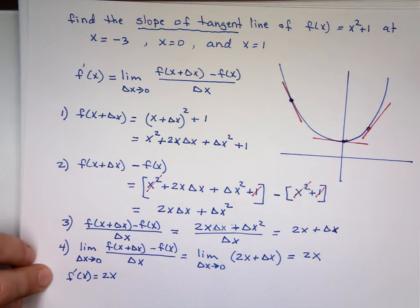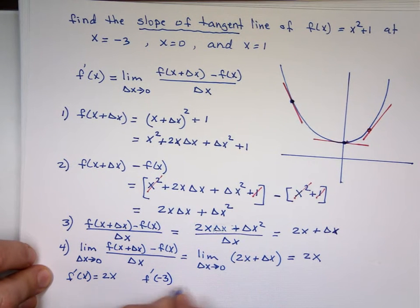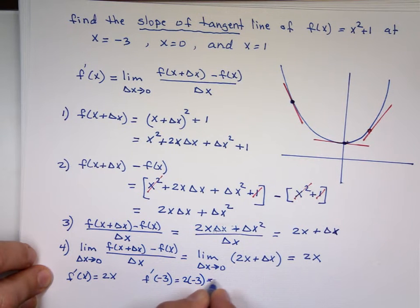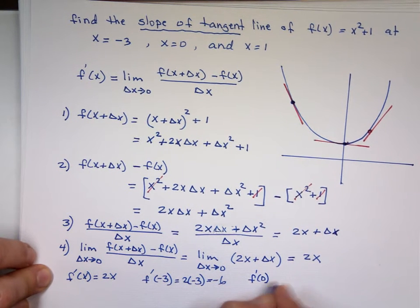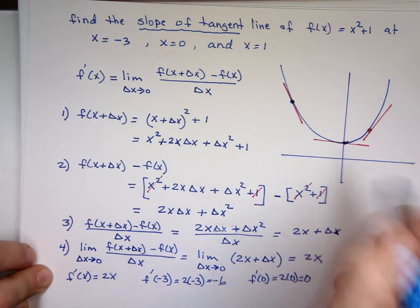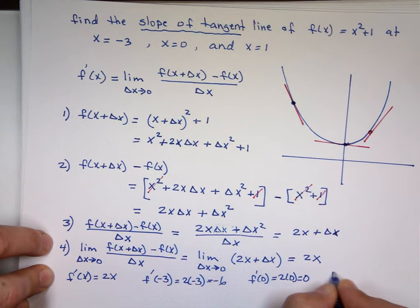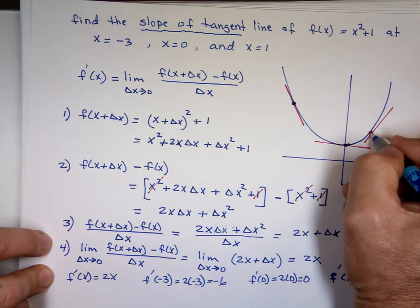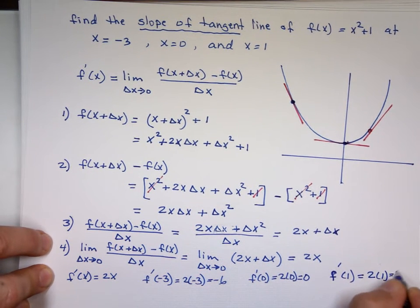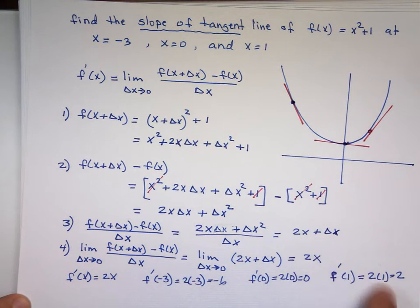Now evaluate: f′(−3) = 2(−3) = −6. Negative value — I said it would be negative, and I'm right. f′(0) = 2(0) = 0 — I'm right again. f′(1) = 2(1) = 2 — positive, as expected. So the derivative is the slope of the tangent line, and we can find the slope at any point.